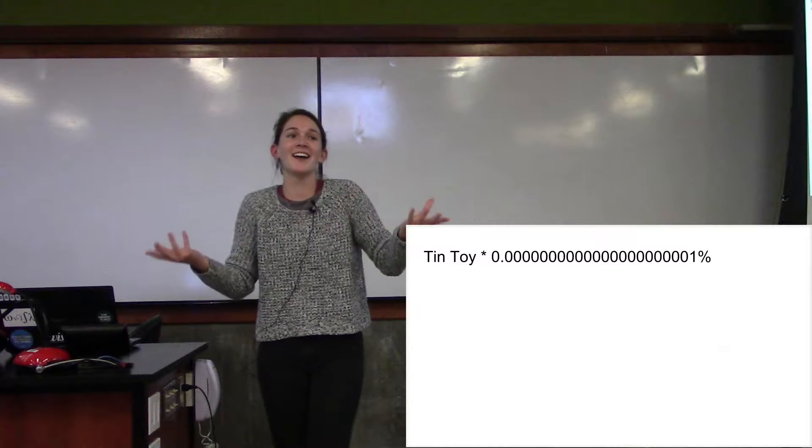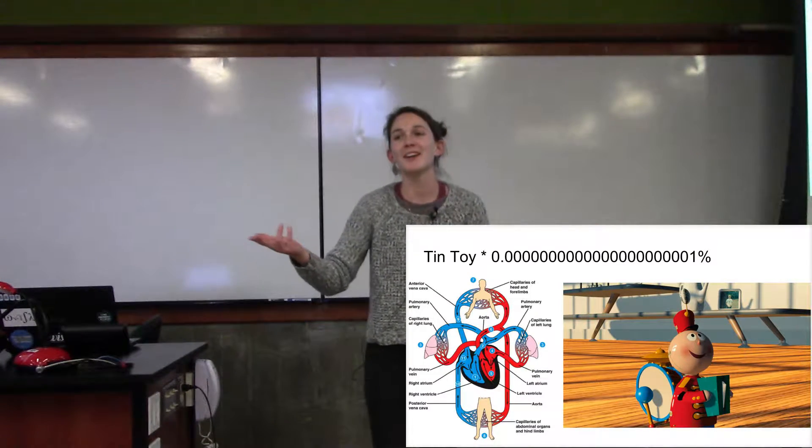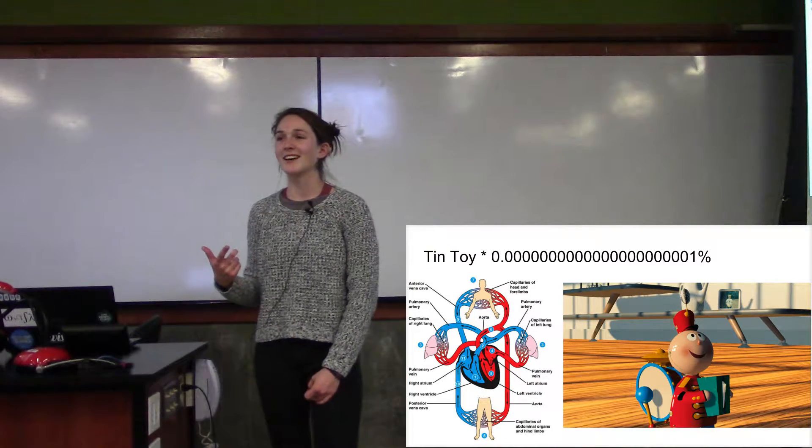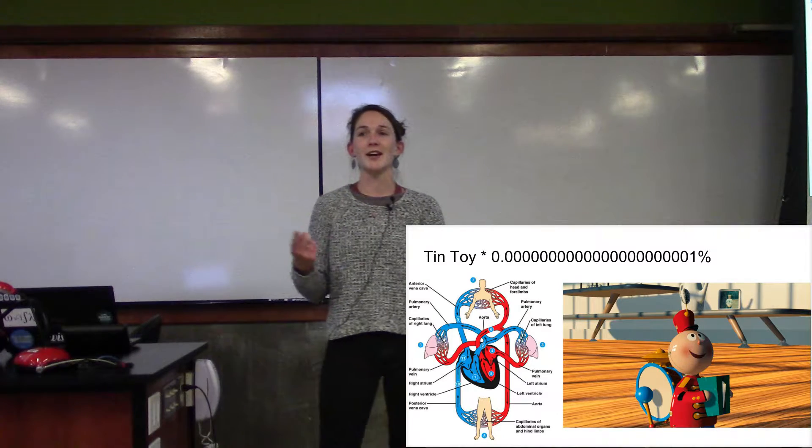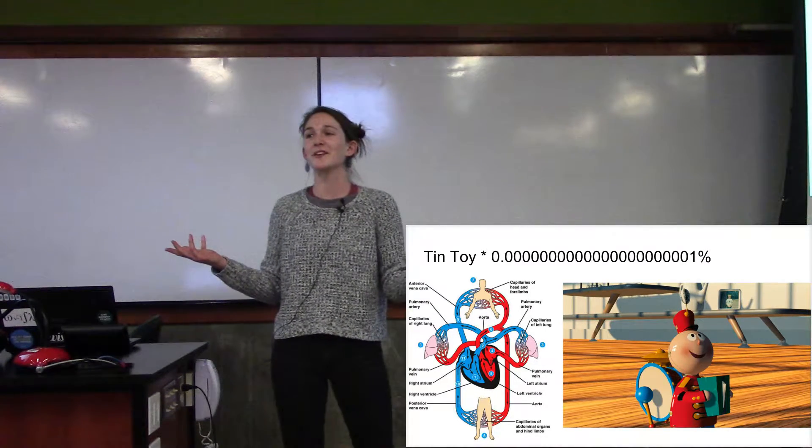And then eventually, like around this time you've practically made one frame out of a Pixar film. And then like that algorithm is going to get a little more complicated. And eventually you'll just have one frame out of Ratatouille. And who knew that you were so capable?